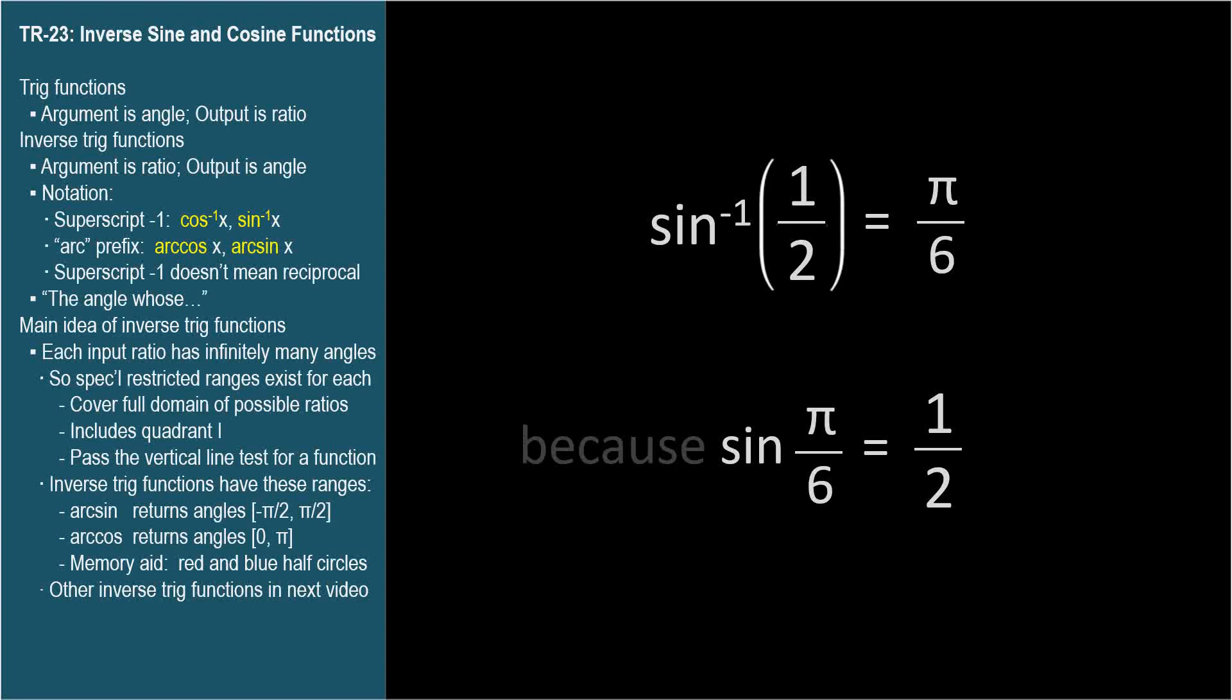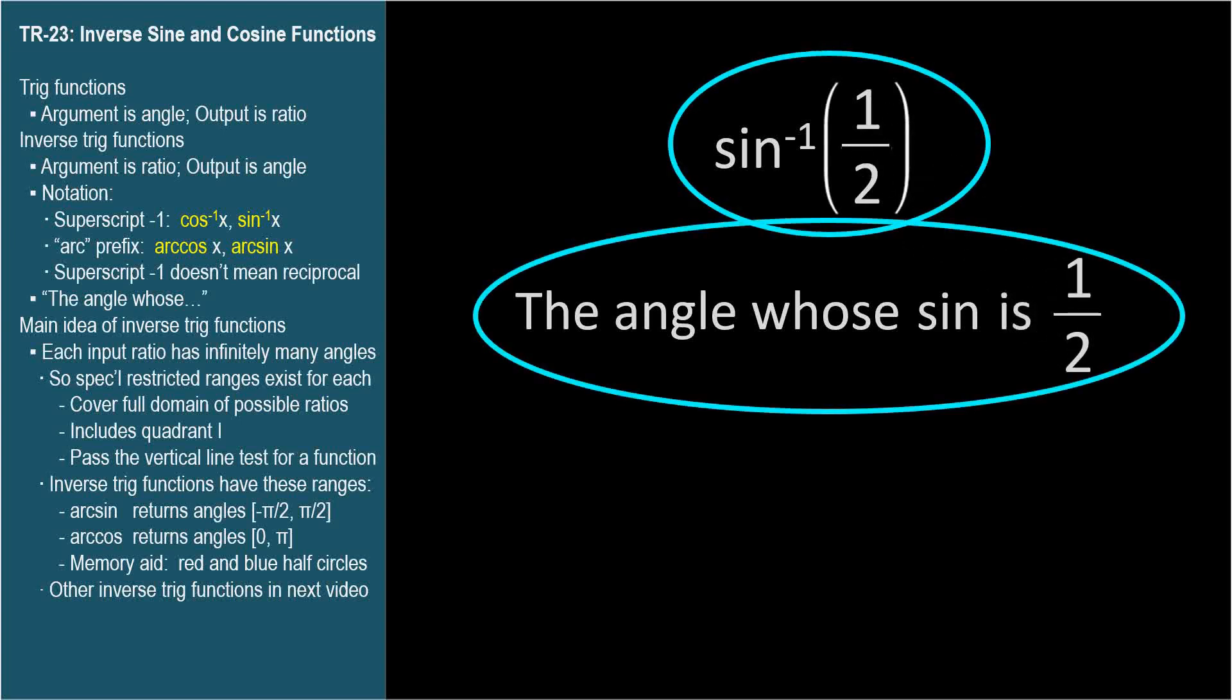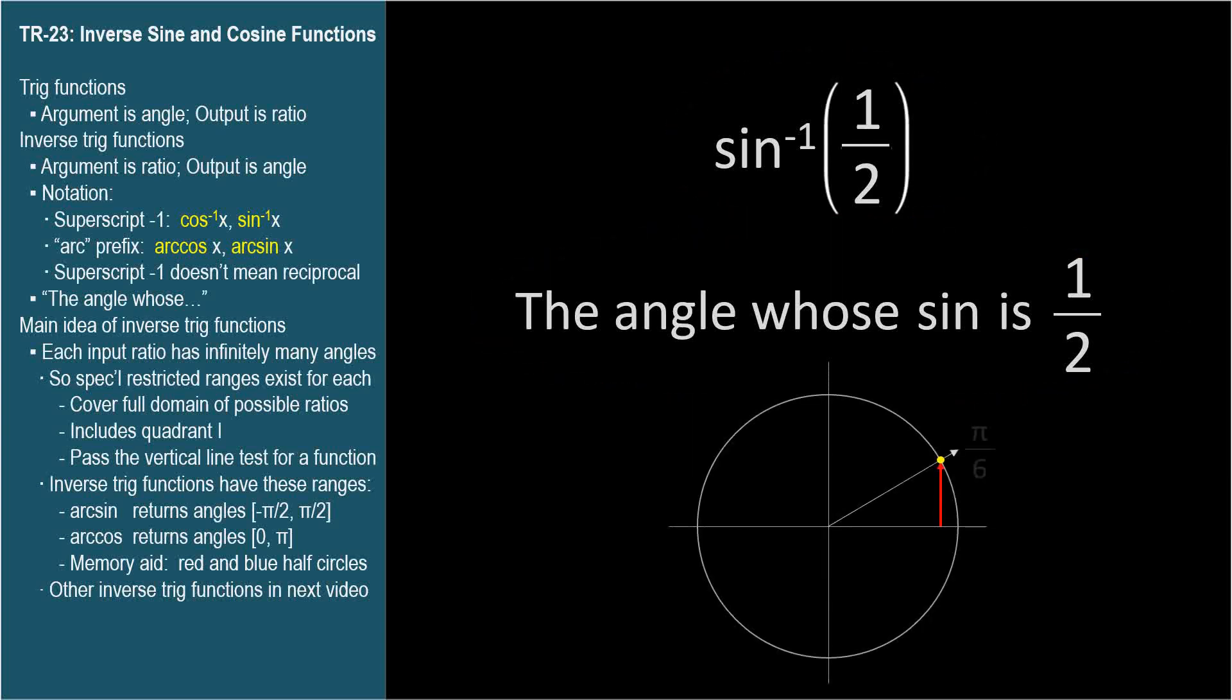A memory trick I used was to substitute the phrase the angle whose in place of the word inverse. So the angle whose sine is 1 half. These expressions mean exactly the same thing. And the angle whose sine is 1 half is pretty easy to see in your head. Pi over 6.